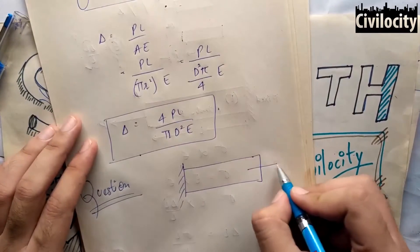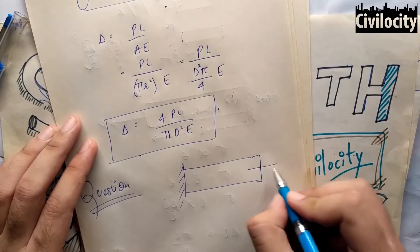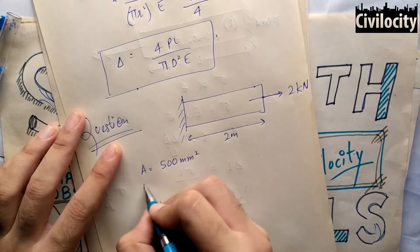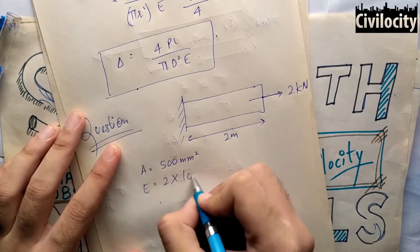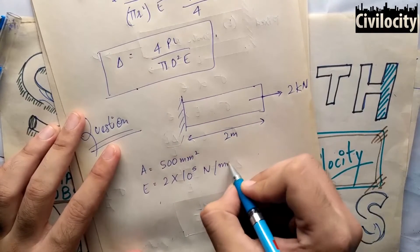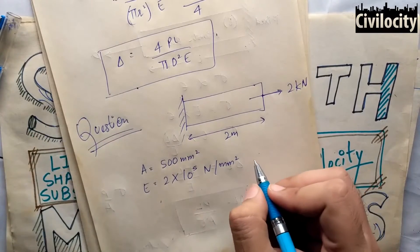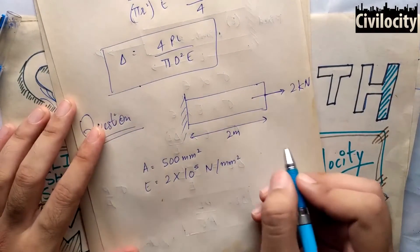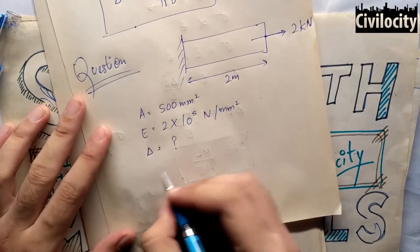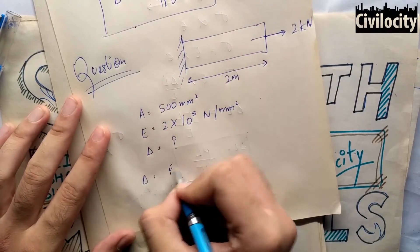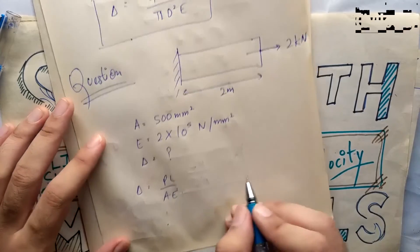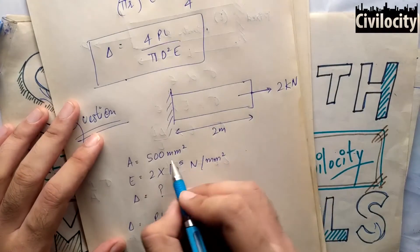Now let's do a question to make things more clear. Suppose we have a prismatic bar fixed on one side and load is applied on the other side. This bar is 2 meters long with a 500 mm² cross sectional area. A 2 kN load is applied and E, the modulus of elasticity, is 2 into 10 to the power 5 Newton per mm². We have to find the deflection caused by this 2 kN load. Apply the formula: deflection equals PL upon AE.